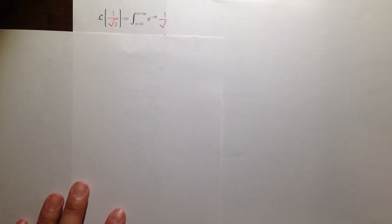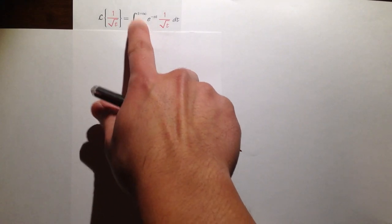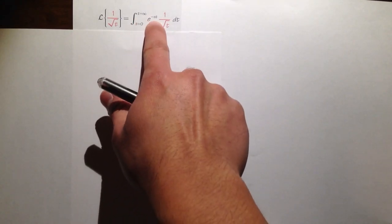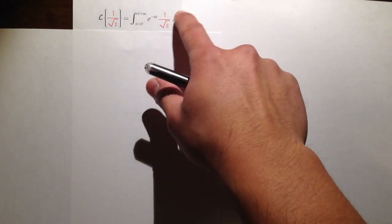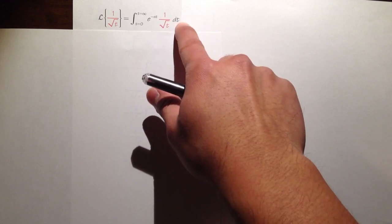And to do this, we are going to use the definition of the Laplace transform. Namely, we will have the integral from t equals 0 to infinity of e to the negative st times 1 over square root of t, dt.